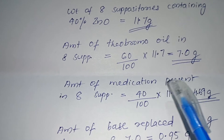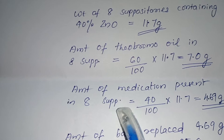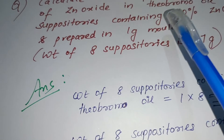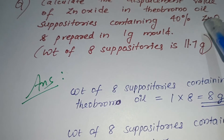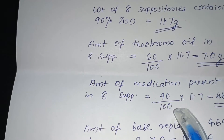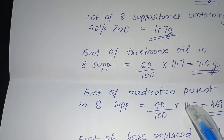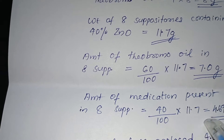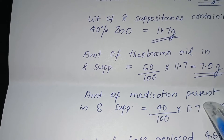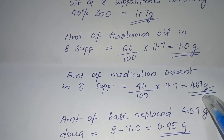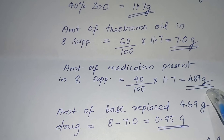The amount of medication present in 8 suppositories: since 40% is zinc oxide, it is 40/100 × 11.7 gram, giving an answer of 4.69 gram.